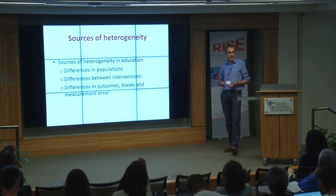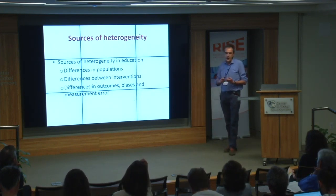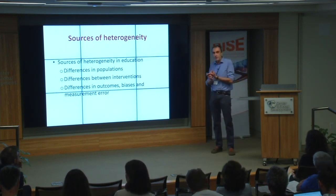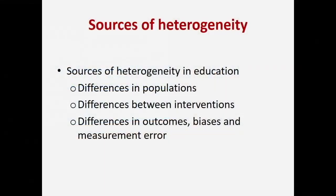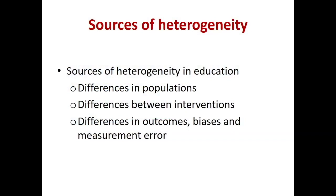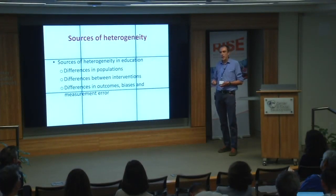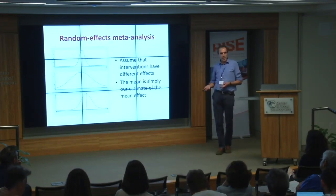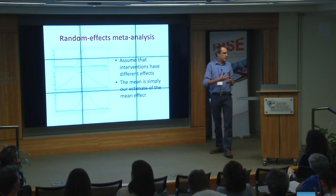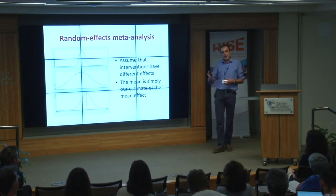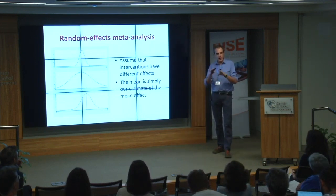There are huge differences across studies that I summarize in three categories: differences in populations — you can't expect the same intervention to have the same impact in all countries; differences in implementation — many times we label interventions 'teacher training' but when you look at the actual projects they are very different things; and differences in how studies are conducted, what is measured, and the quality of the study. That's why people now use random effects meta-analysis: in a random effects model, you don't believe in a single universal true effect — each study is an estimate of its own true effect for that particular intervention.